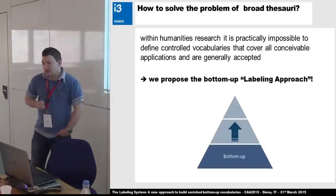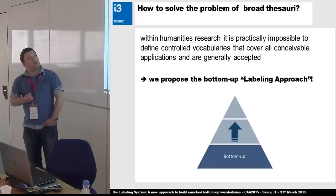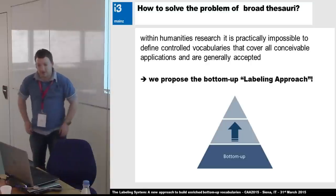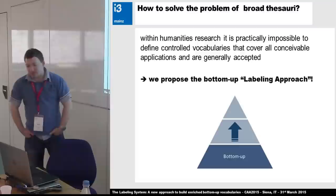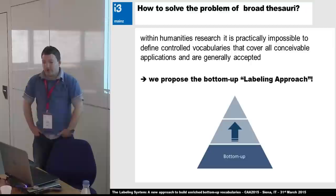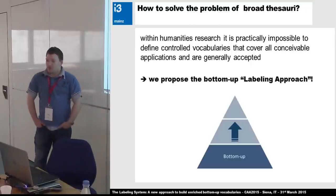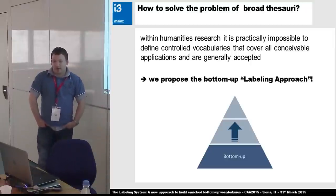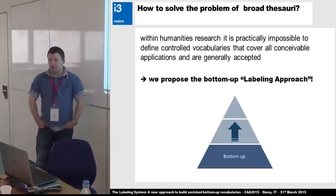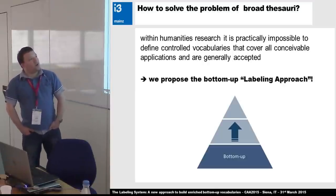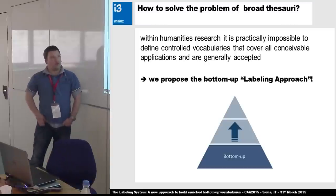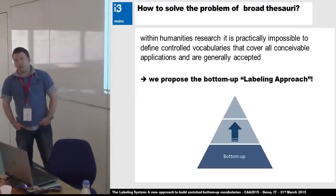There is still one big problem: these reference thesauri are mostly very broad. And within humanities research, it is practically impossible to define a conformed vocabulary that covers all applications. You will never get a reference thesaurus that is generally accepted. So we propose not the top-down approach that reference thesauri use — we propose the bottom-up labeling approach.